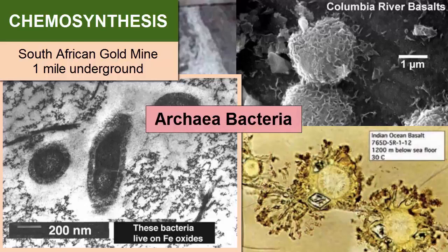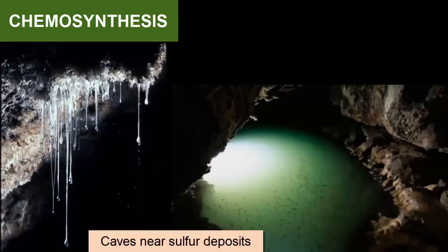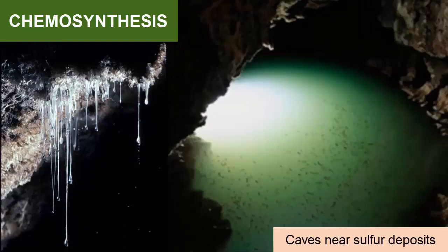Other species of bacteria have been found deep in mineshafts and in 1,000-meter-deep volcanic rocks along the Columbia River. In limestone caves near volcanic sulfur-rich hot springs, bacteria capture energy from hydrogen sulfide gas and use that energy to synthesize sugar. Sulfuric acid is one of the toxic byproducts, and these bacteria live in highly acidic, mucus-rich mats attached to the cave walls.